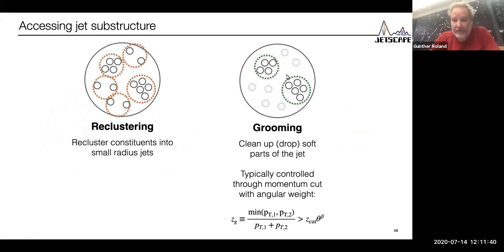Once we have reclustered, one thing we can do is apply a grooming procedure that gets rid of some of the soft stuff that may be confusing and only retains the hard substructure of the event in terms of subjets. For this grooming procedure you can have cuts on the momentum fraction carried by these subjets and make that cut dependent on the angle, which you can put to various powers.